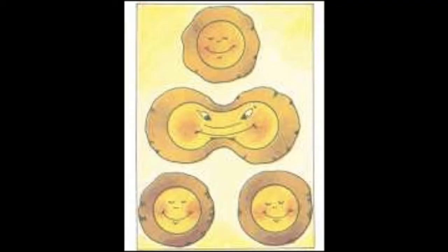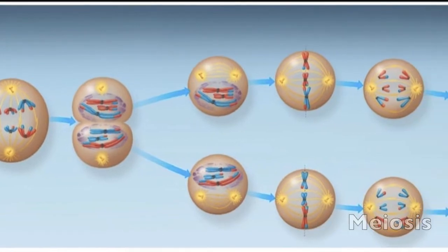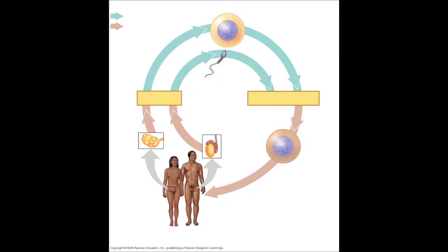Cytokinesis is the division of the cytoplasm by the formation of a cleavage furrow. Meiosis is a specialized cell division to form gametes. Unlike mitosis, meiosis produces haploid cells and helps contribute to the genetic variation of the species.